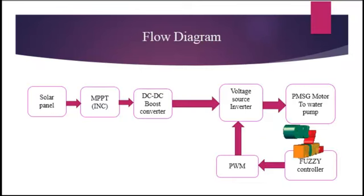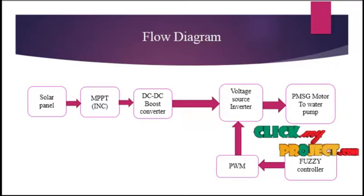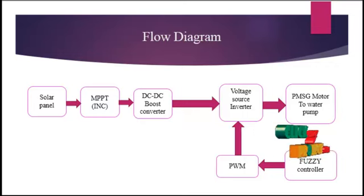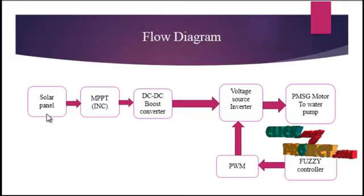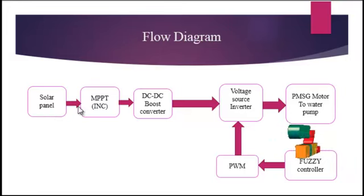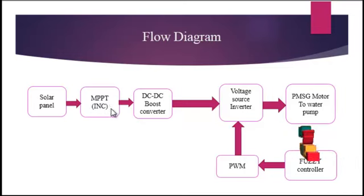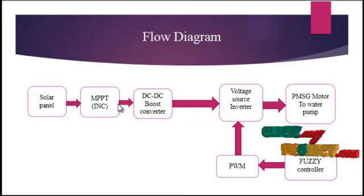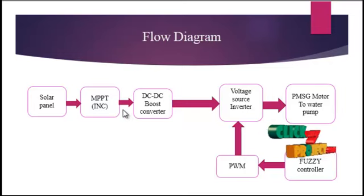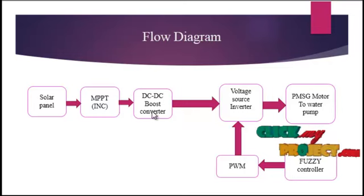Next we will discuss about the flow of the product. In the proposed system, a renewable source — a solar panel — will be implemented with 72 cells, giving a constant DC output power. This passes to the maximum power point tracking, using the incremental conductance technique, which then passes to a DC-to-DC boost converter. This is a high-power solar application that can improve the power level and get the maximum boost.